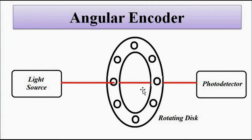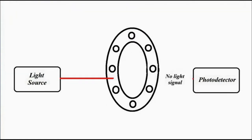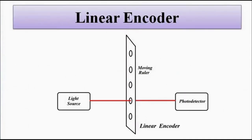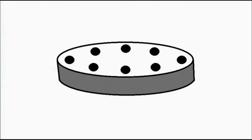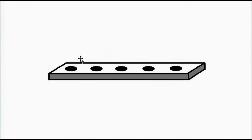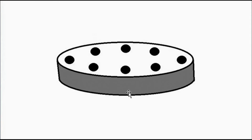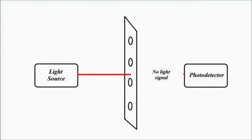For angular movement, rotatory motion determines whether the light signal gets transmitted or blocked, and for linear movement it is straight-line motion. This is the basic principle of displacement measurement using optical linear or angular encoders. A simple design linear encoder looks like a ruler setup, and a rotatory angular encoder uses a disk design, though the actual designs can be much more complicated.